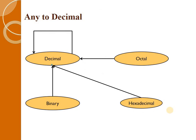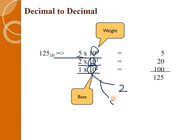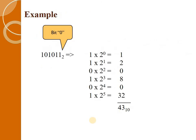We have now covered all conversions from decimal to any system. Now let us look at conversions from any to decimal. The process is the same as before: for 125 in decimal, we compute 5 × 10⁰ + 2 × 10¹ + 1 × 10². In binary we use base 2, in octal base 8, in hexadecimal base 16. We apply the same positional multiplication technique.